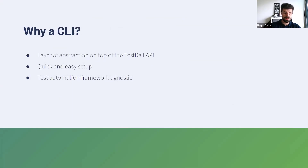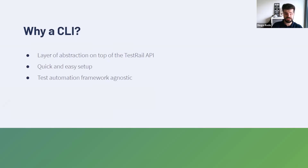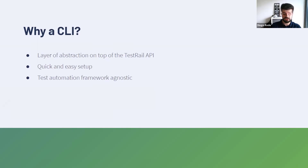Why did we create a CLI? This is a layer of abstraction on top of the TestRail API, so you don't have to deal with all the complexity — it allows you to import things in a clearer way. It's quick and easy to set up, and it's test framework agnostic. This means that as long as you have a JUnit report, which can be generated by a lot of frameworks like we just mentioned, you're good to import your results to TestRail, create your test cases, etc. It's a pretty straightforward way of supporting a large community of customers.